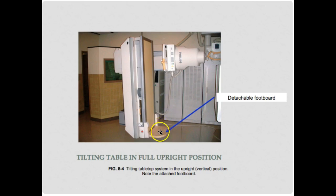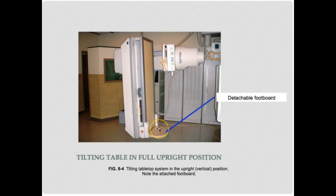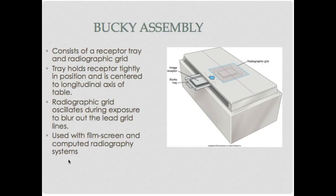There's a detachable footboard, shoulder harnesses that clip on, and little handholds that clip onto the table. When doing fluoro you need to take your Bucky tray all the way down to the end, and there's a lead-lined Bucky tray cover right there. You'll have shoulder harnesses for Trendelenburg and handles as well — there's a bunch of different accessories that can attach onto this table.